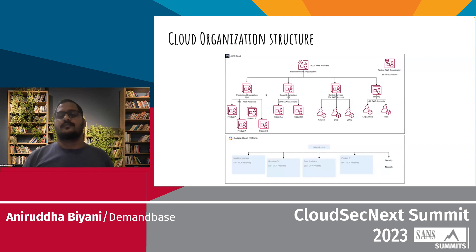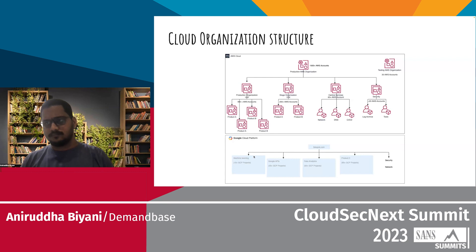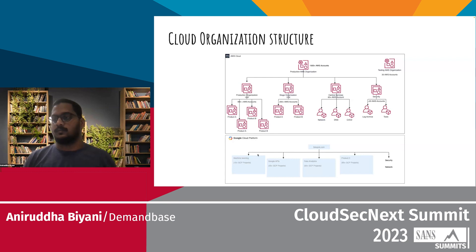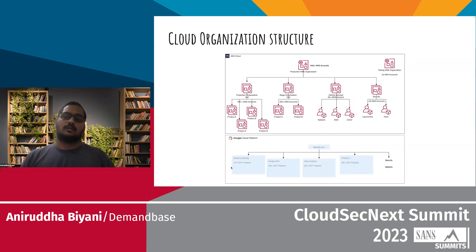While AWS was our major footprint within the organization's cloud infrastructure, we did have a sizable GCP foothold as well — either for Google APIs, data analytics, machine learning and AI/ML services, and some of our products that ran in Google Cloud.